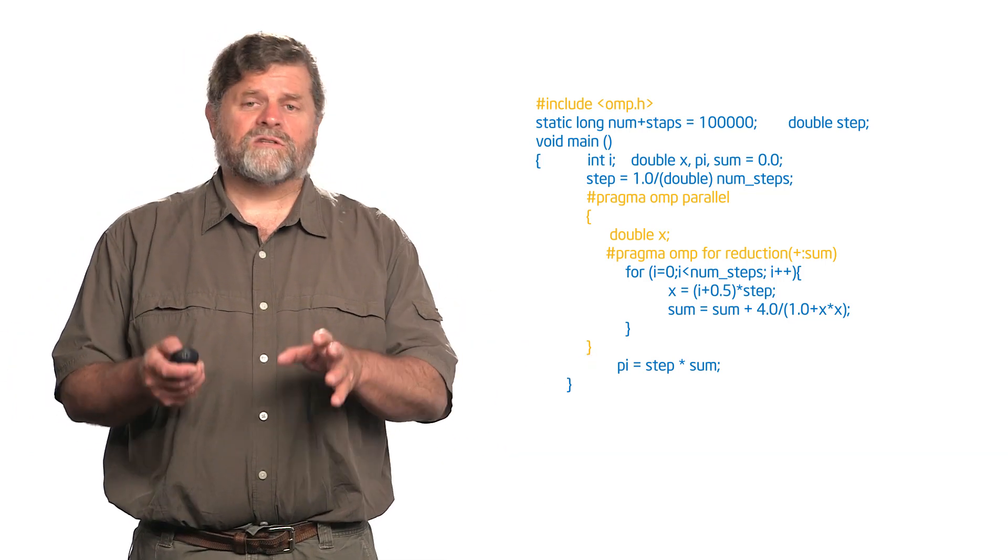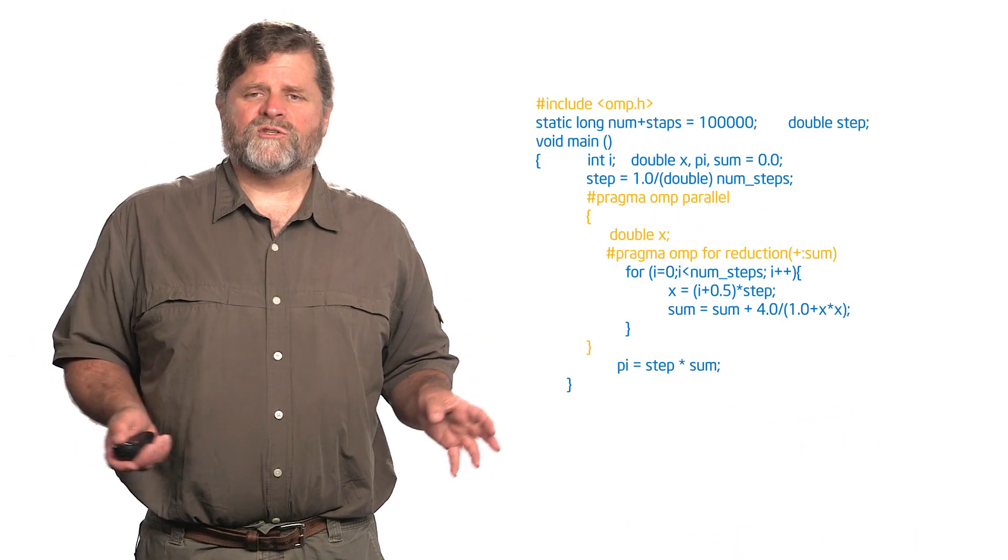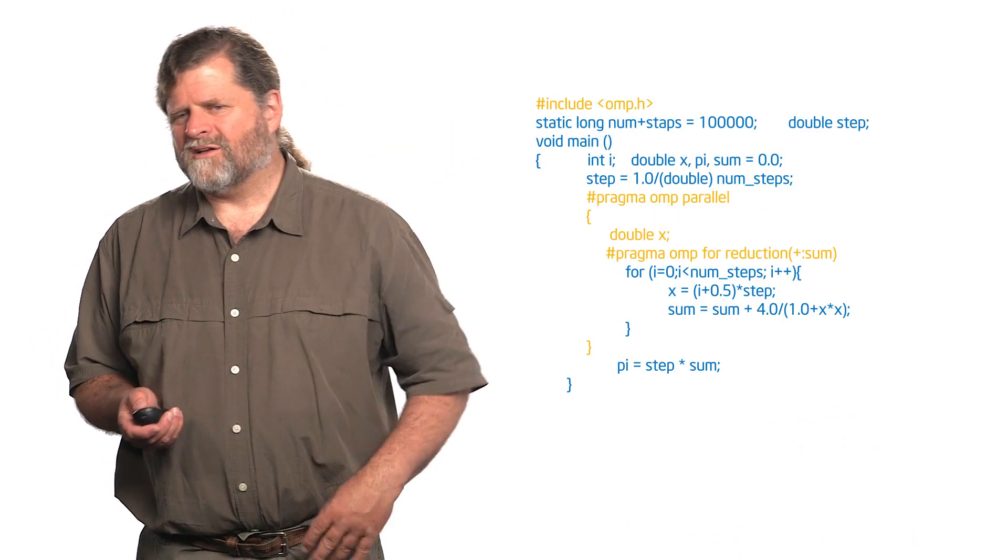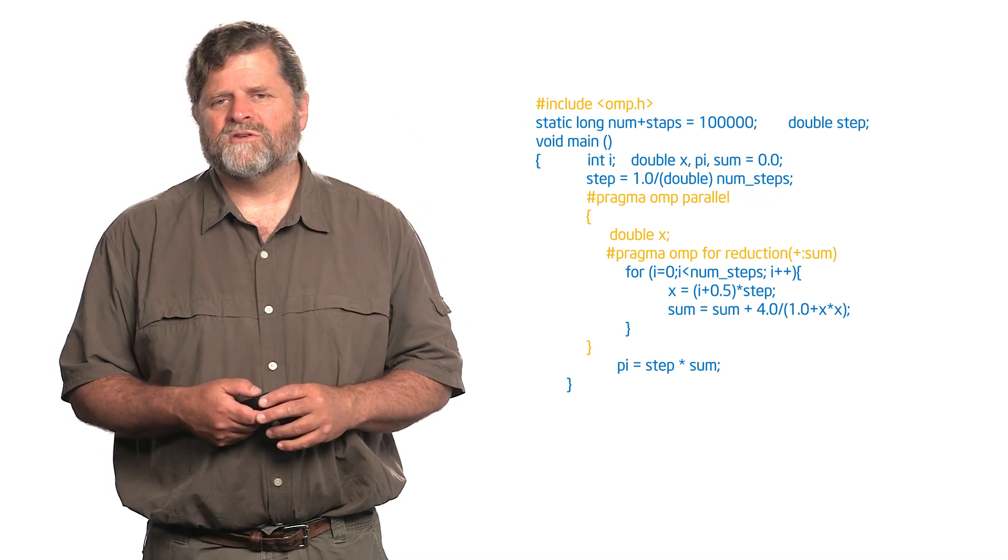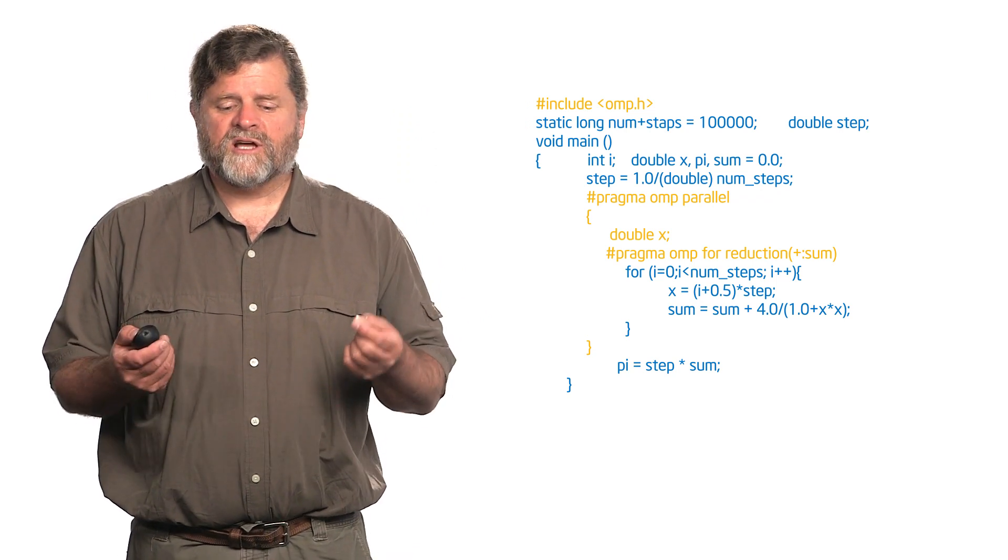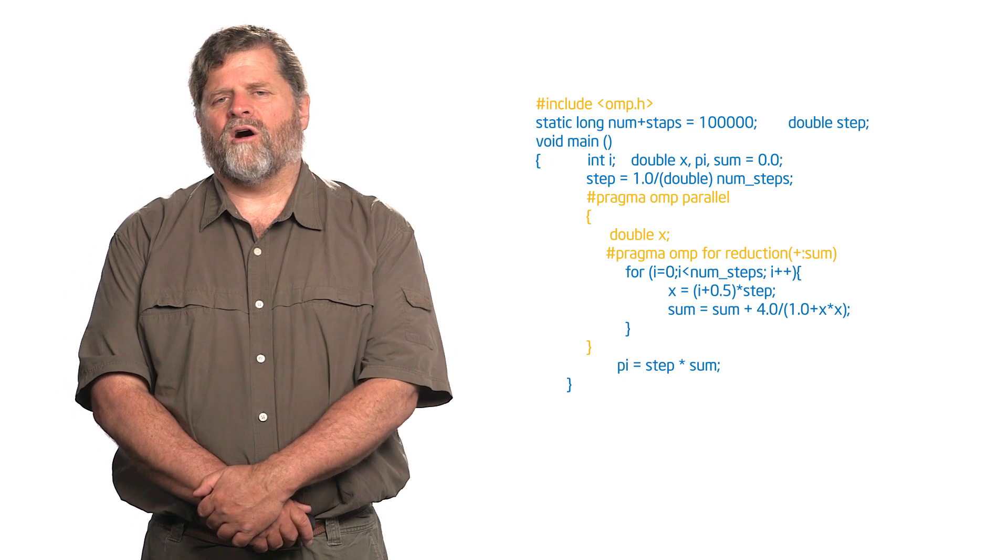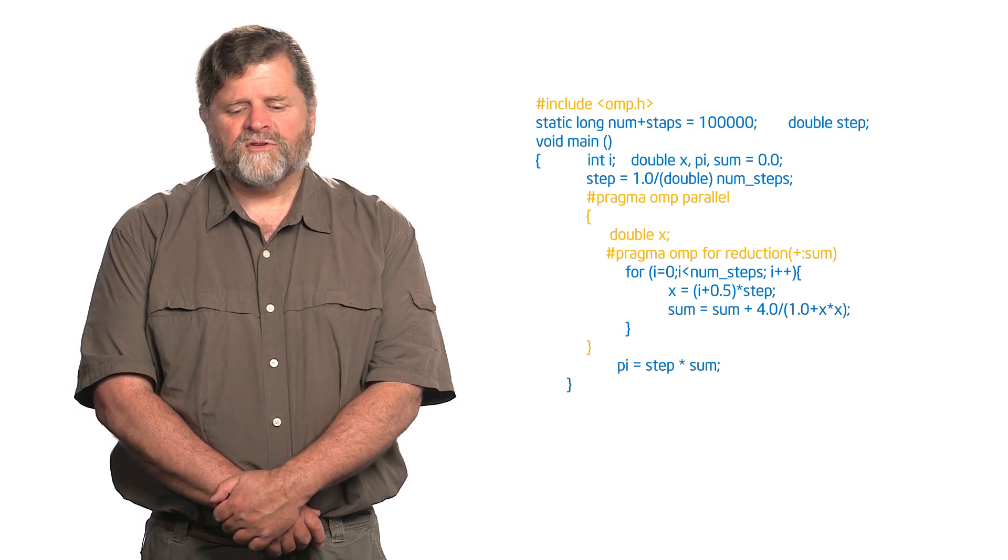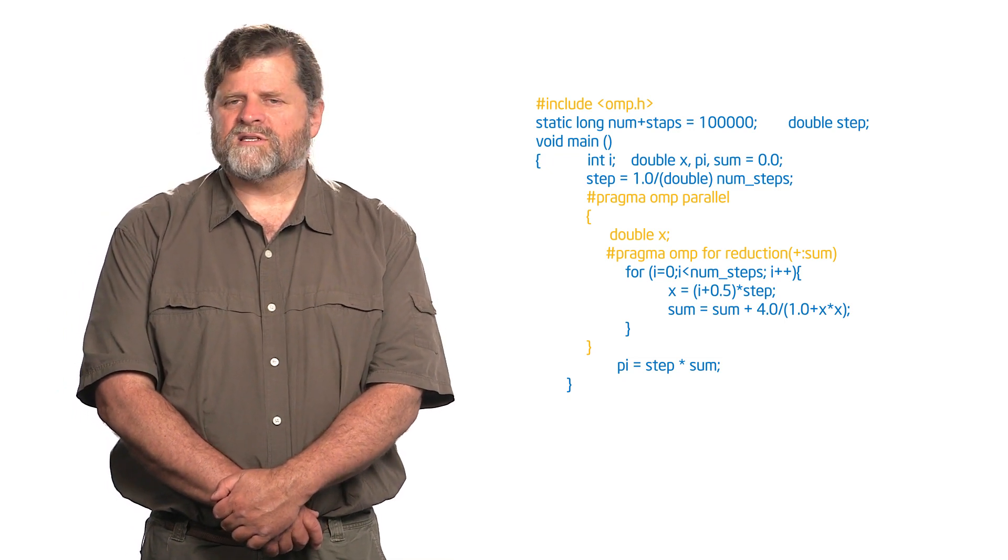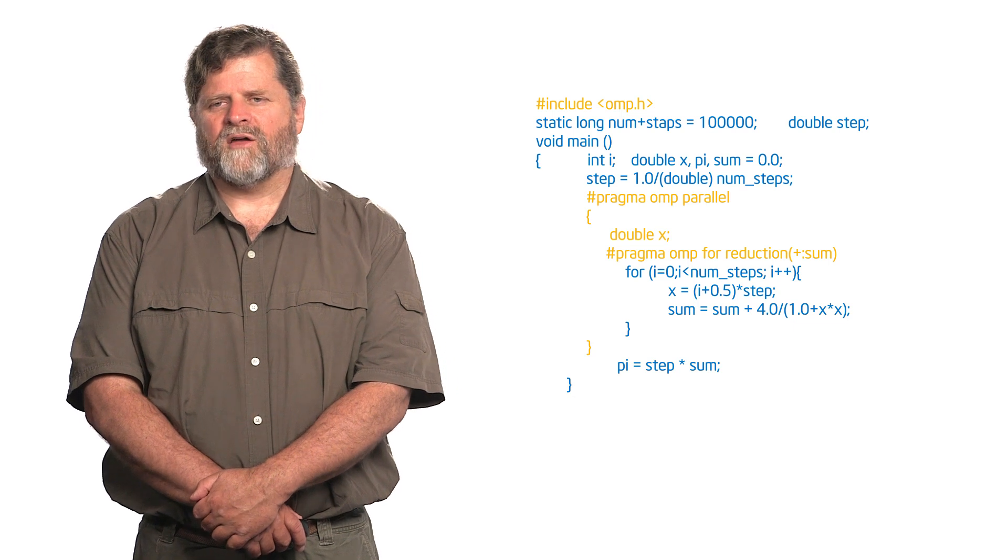So now each thread is going to do some portion of that loop. I didn't put a schedule clause, so I just said, you know what, compiler? Whatever you do I'm happy with is good enough. And then I use the reduction at the end to combine all the sums. And then after the loop, I take that global sum, multiply it by this step to get my value of pi.